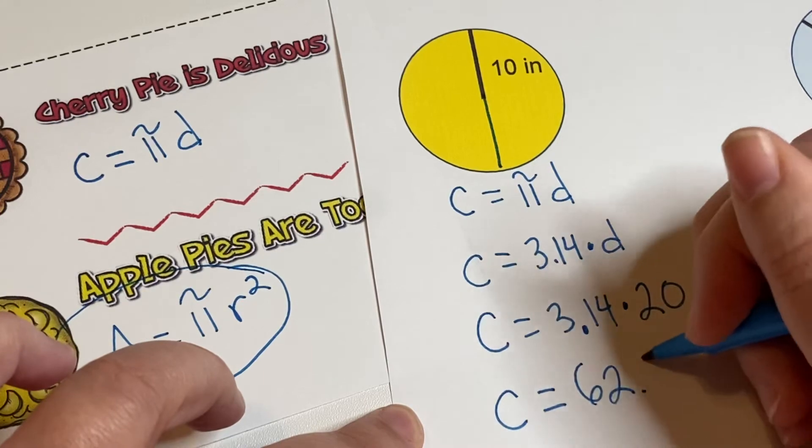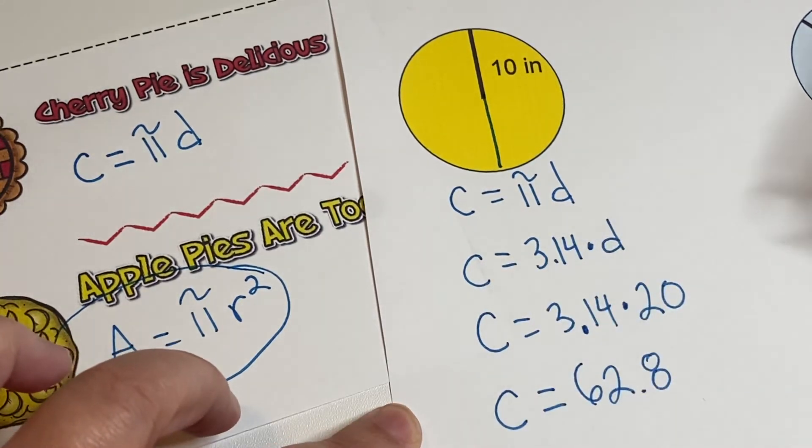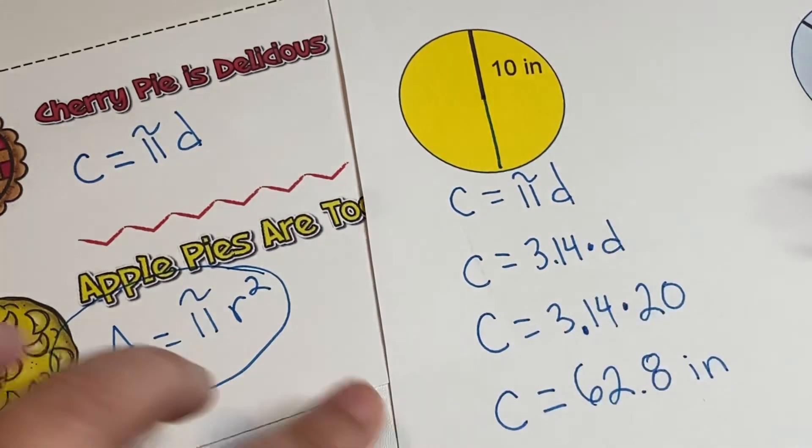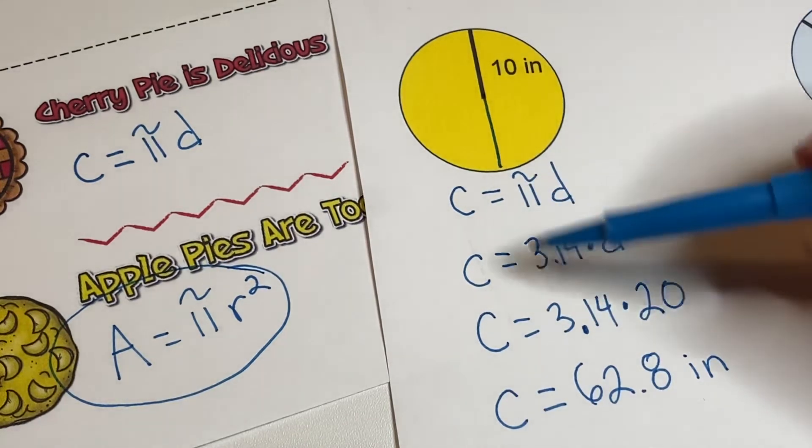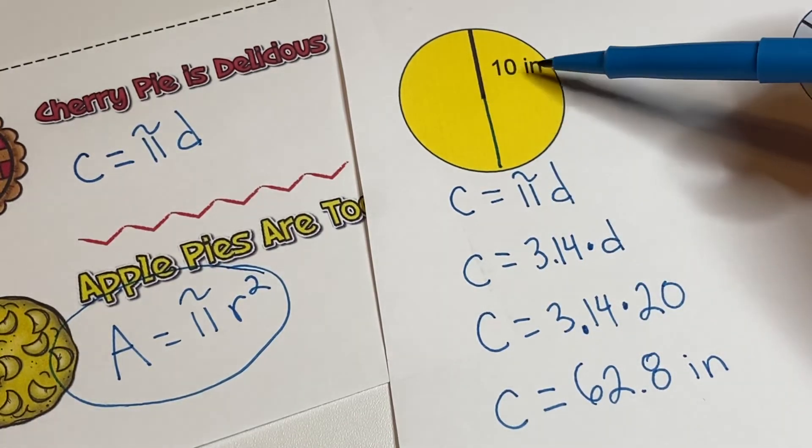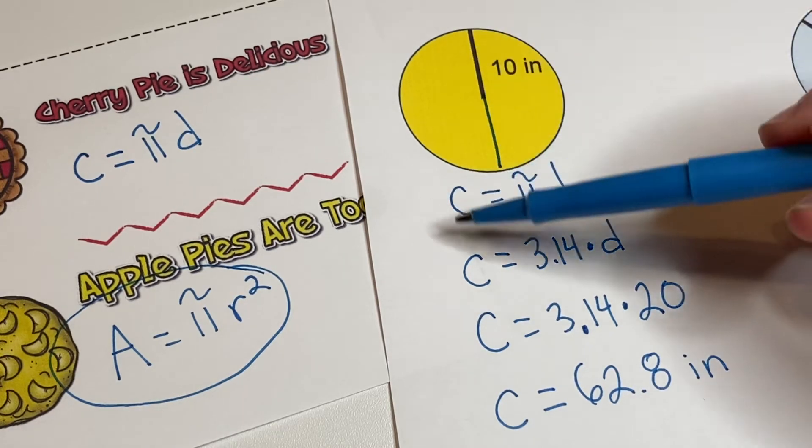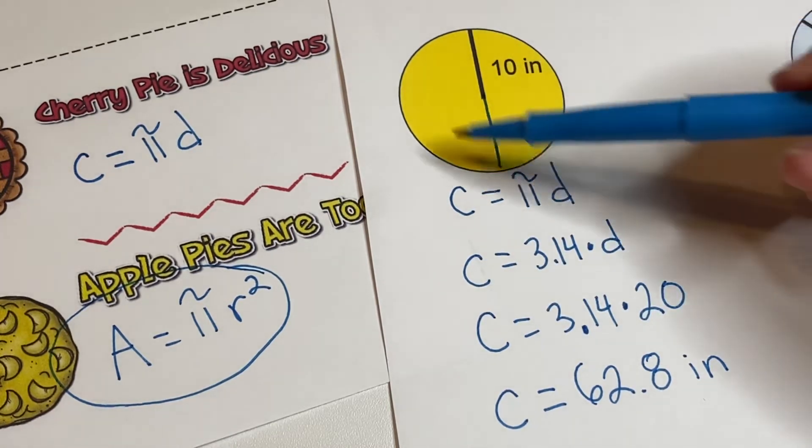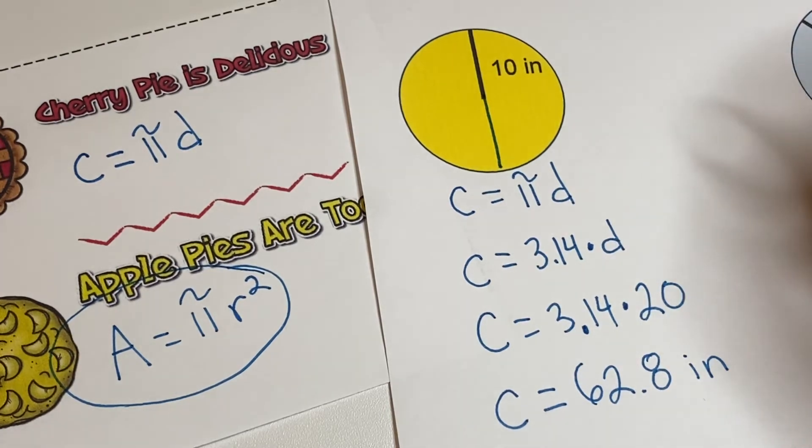We get c equals, or the distance around this outside, equals 62.8 and this is inches. It's not squared. There's no squares in here, there's no exponents, and we're talking about circumference which is this distance around the outside.